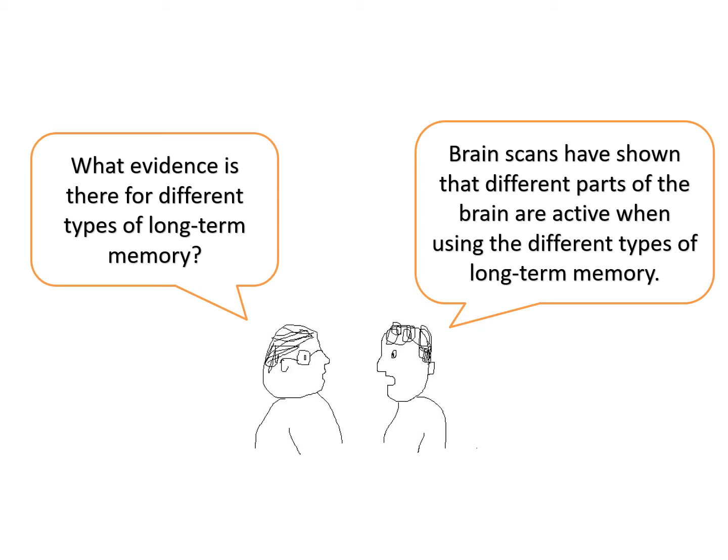So what is the evidence for different types of long-term memory? Brain scans have shown that different parts of the brain are active when using different types of long-term memory.